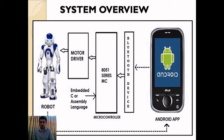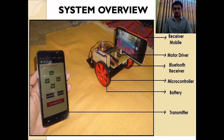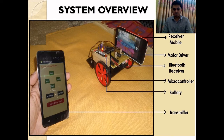Here is the system overview. The robot and transmitter Android app are communicating with each other, and there is an embedded system in between them with a microcontroller. In the practical setup, the transmitter Android app communicates with the Arduino board. A Bluetooth receiver receives the Bluetooth signal from the transmitter app, which is decoded by the microcontroller and passed to the motor driver IC to drive the robot. There is also a receiver Android phone mounted on the robot, which can take photos, upload them to the server, get location information, and send feedback to the transmitter Android app.